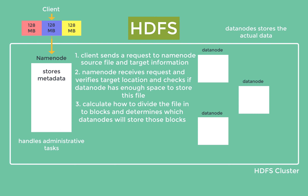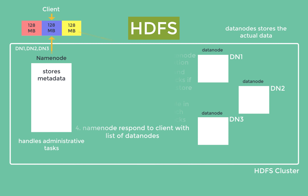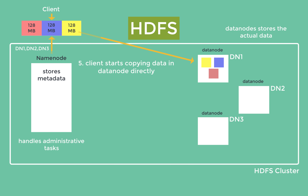After verification, the NameNode calculates how to divide the data into blocks and determines which DataNodes will store those blocks. This block allocation strategy is essential for achieving data distribution, reliability, and fault tolerance. The NameNode then responds to the client with the list of DataNodes where each data block should be copied, selected based on the HDFS replication factor and their availability. The client then starts copying the data directly to the DataNodes — it does not go through the NameNode for the actual data transfer. As the client copies each block to a DataNode, that DataNode replicates the block to other DataNodes according to the replication factor.